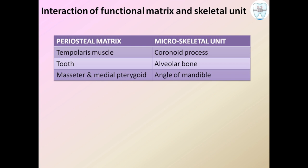In summary, the Functional Cranial Component has two parts: Functional Matrix and Skeletal Unit. The periosteal matrix secretes local environmental growth factors and affects the microskeletal unit, causing transformation — changes in shape and size. The capsular matrix is controlled by epigenetic factors and affects the macroskeletal unit, causing translation — change in position. Together, transformation and translation account for the growth of bone. That is the basic concept of Functional Matrix Theory.